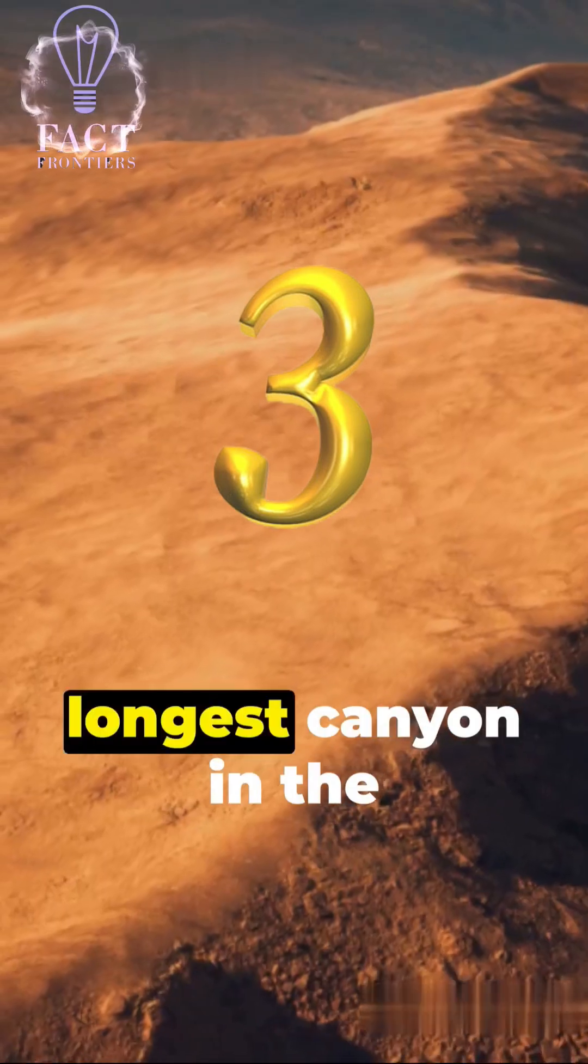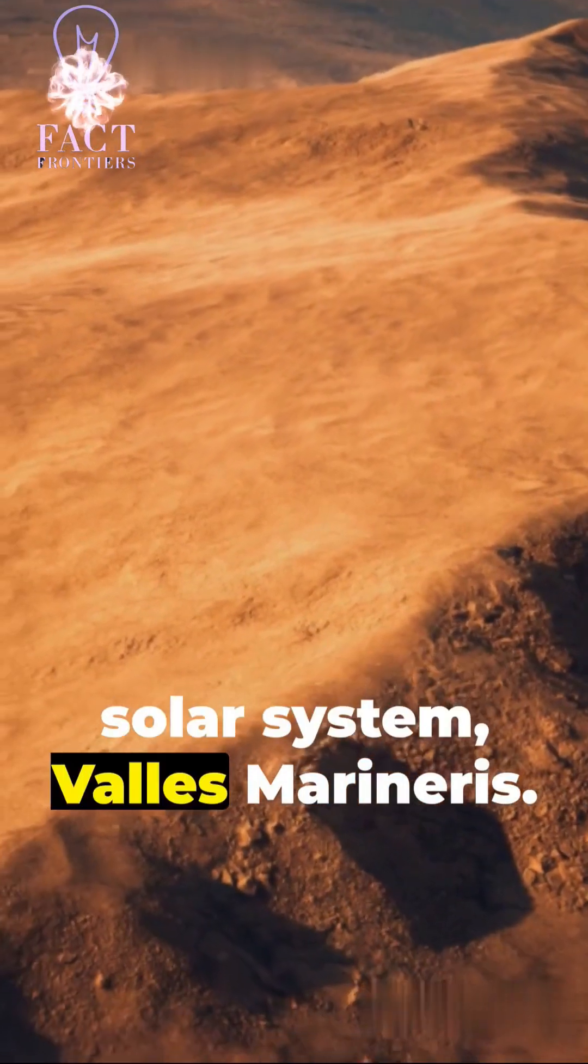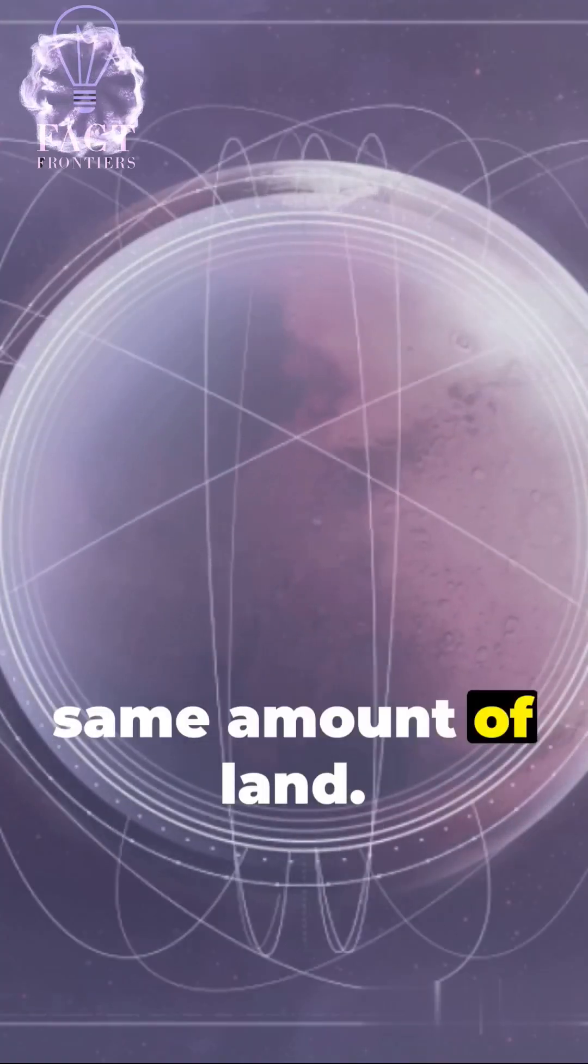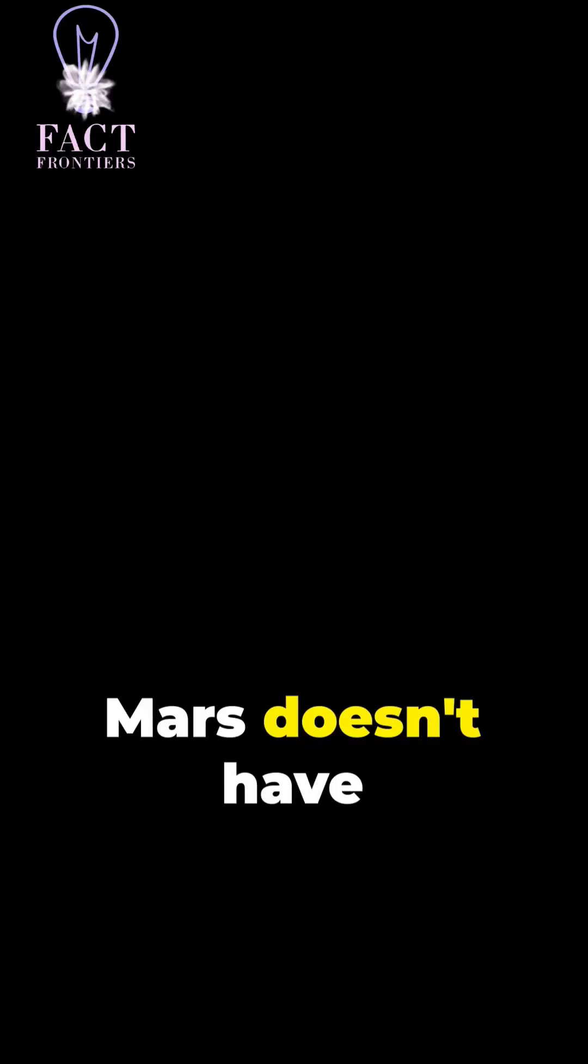3. Mars is home to the deepest, longest canyon in the solar system, Valis Marineris. It's four times deeper than the Grand Canyon. 4. Mars is half the size of Earth but has the same amount of land. How? It's because Mars doesn't have oceans.